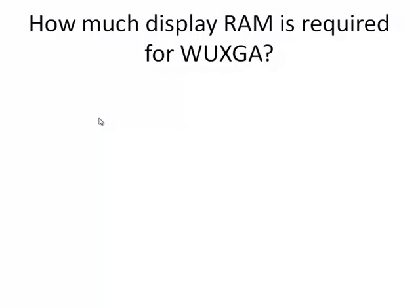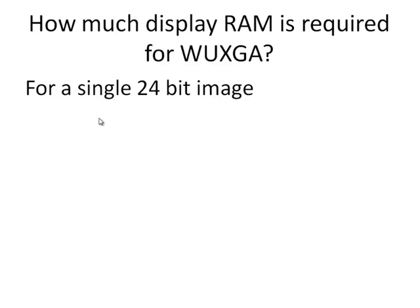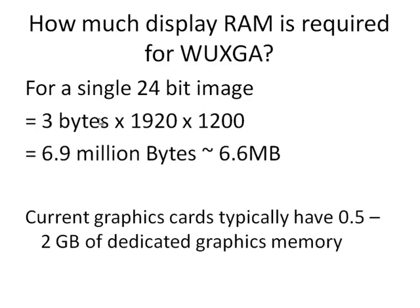Considering how much display RAM is required for WXGA: we often work with 24 bits per pixel — 8 bits for red, 8 bits for green, 8 bits for blue, giving 3 bytes. So 3 bytes × 1920×1200 gives approximately 6.6 megabytes. Current graphics cards typically have anywhere from half a gigabyte to 2 gigabytes of dedicated graphics memory, because they store much more than just the screen buffer — especially for 3D games, where extra texture and image data is needed to generate the final screen image.